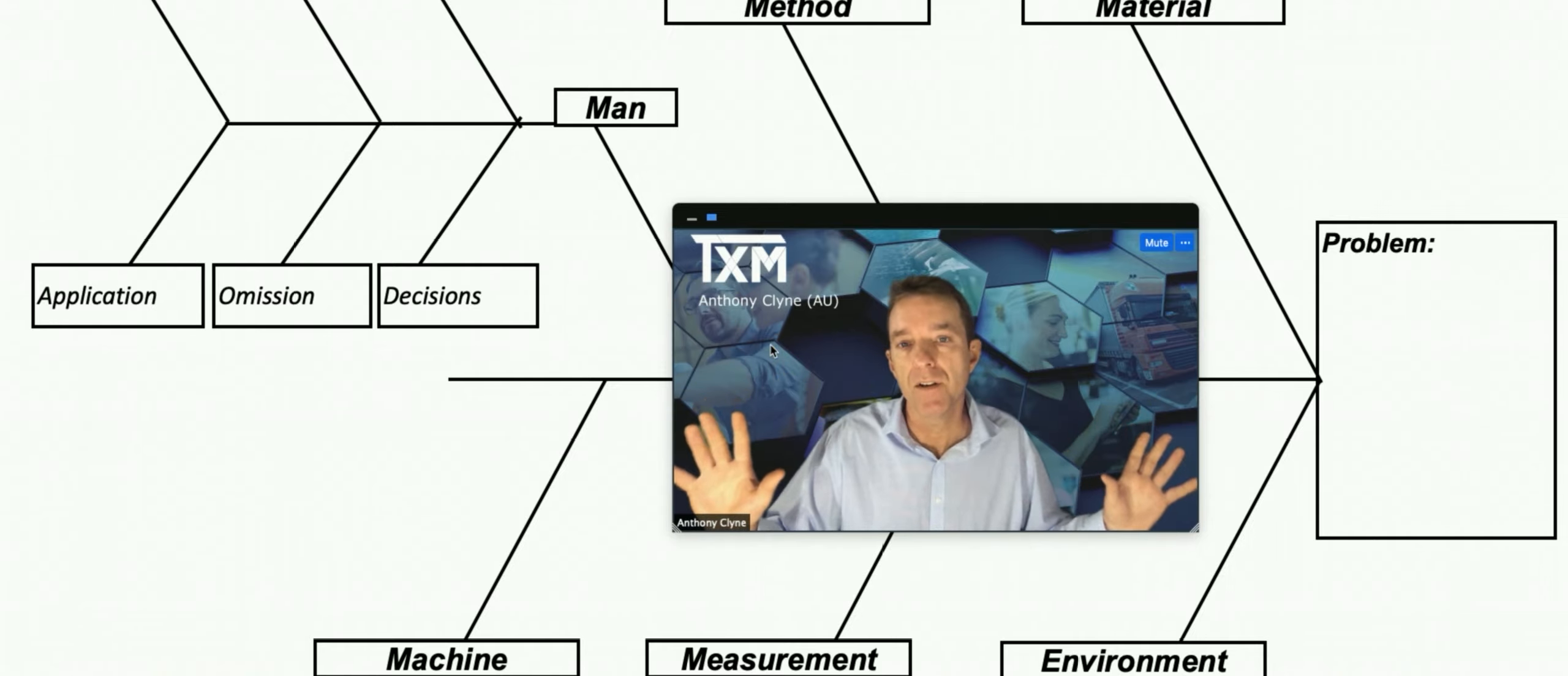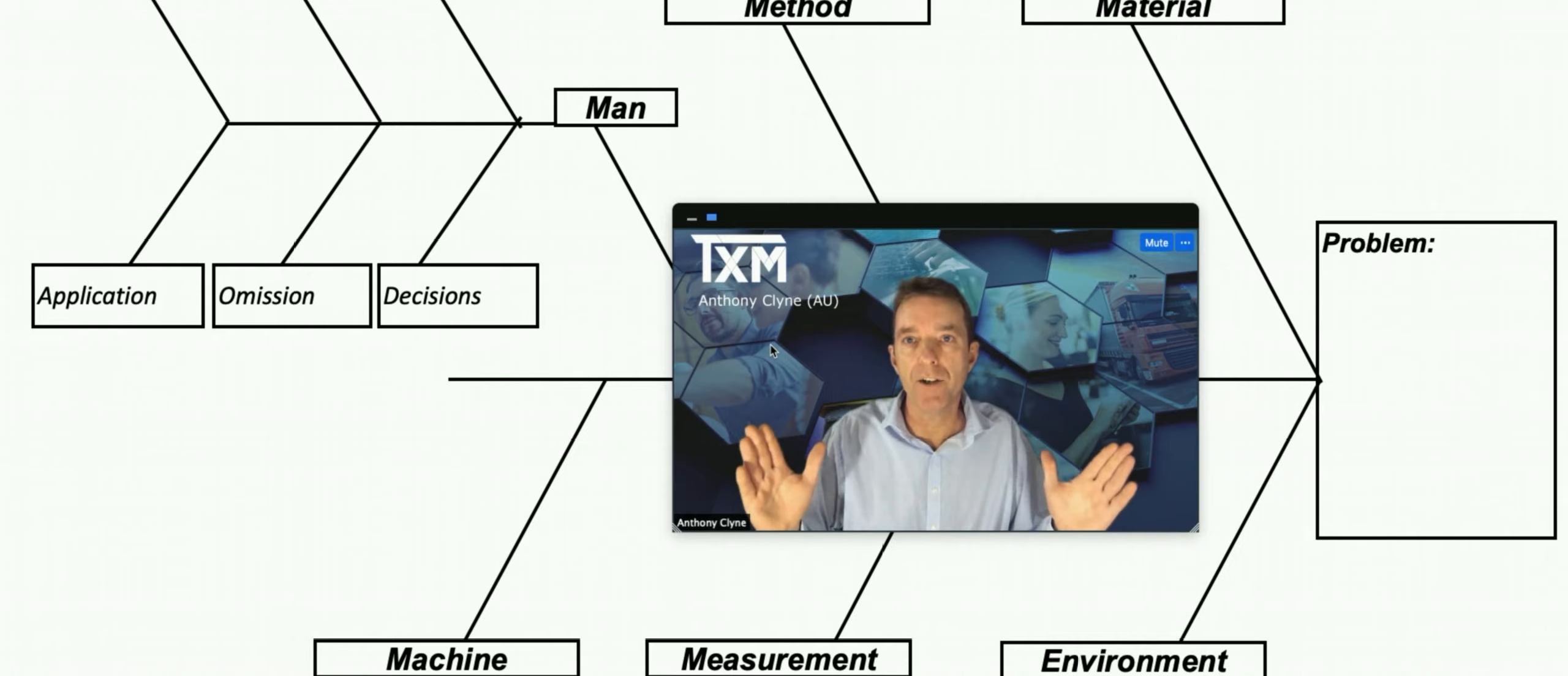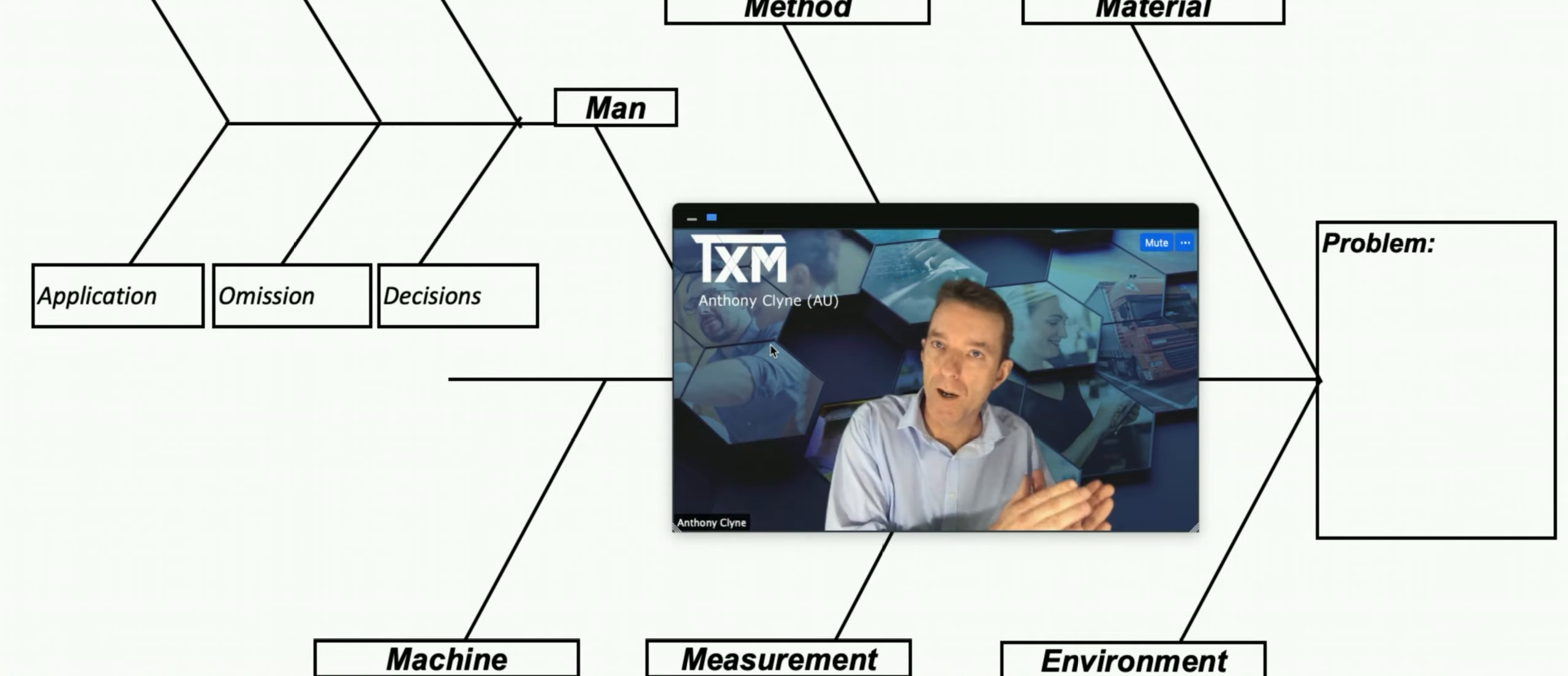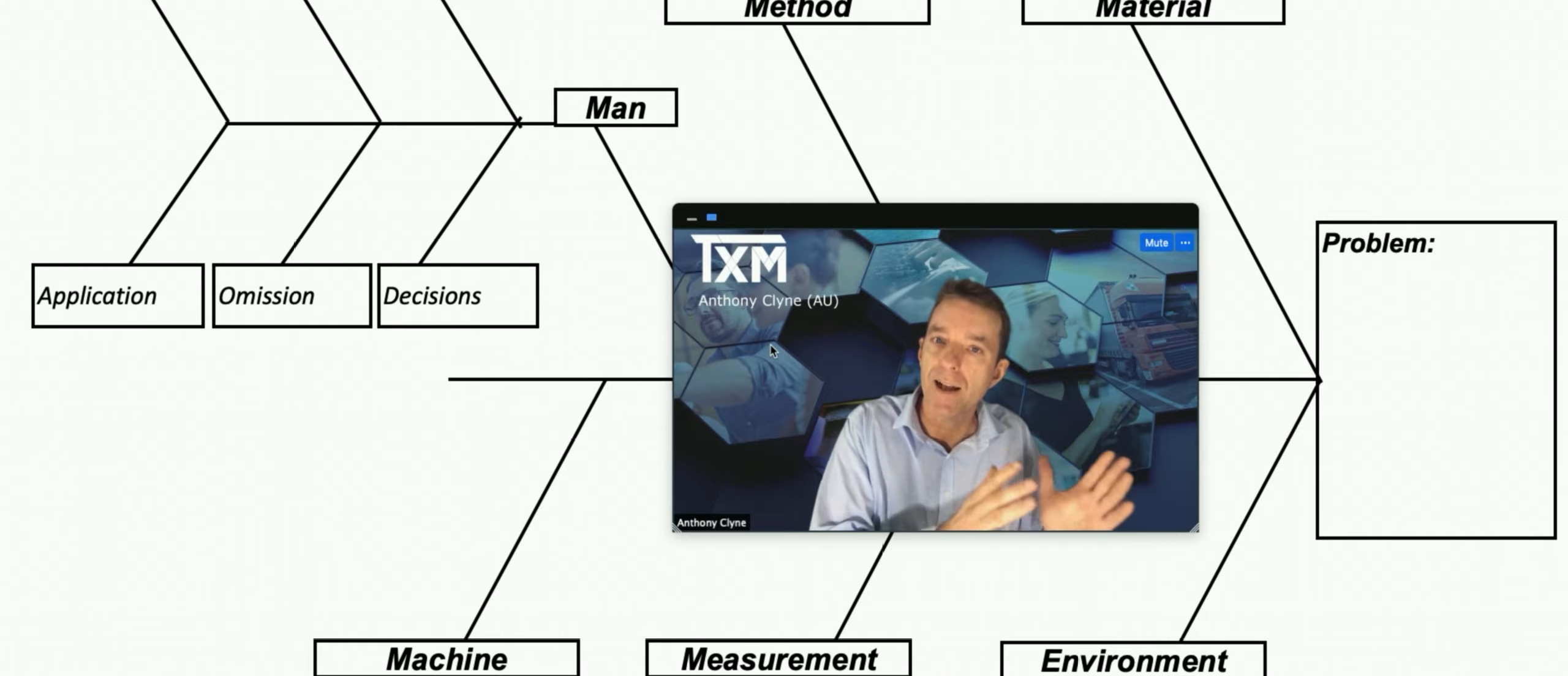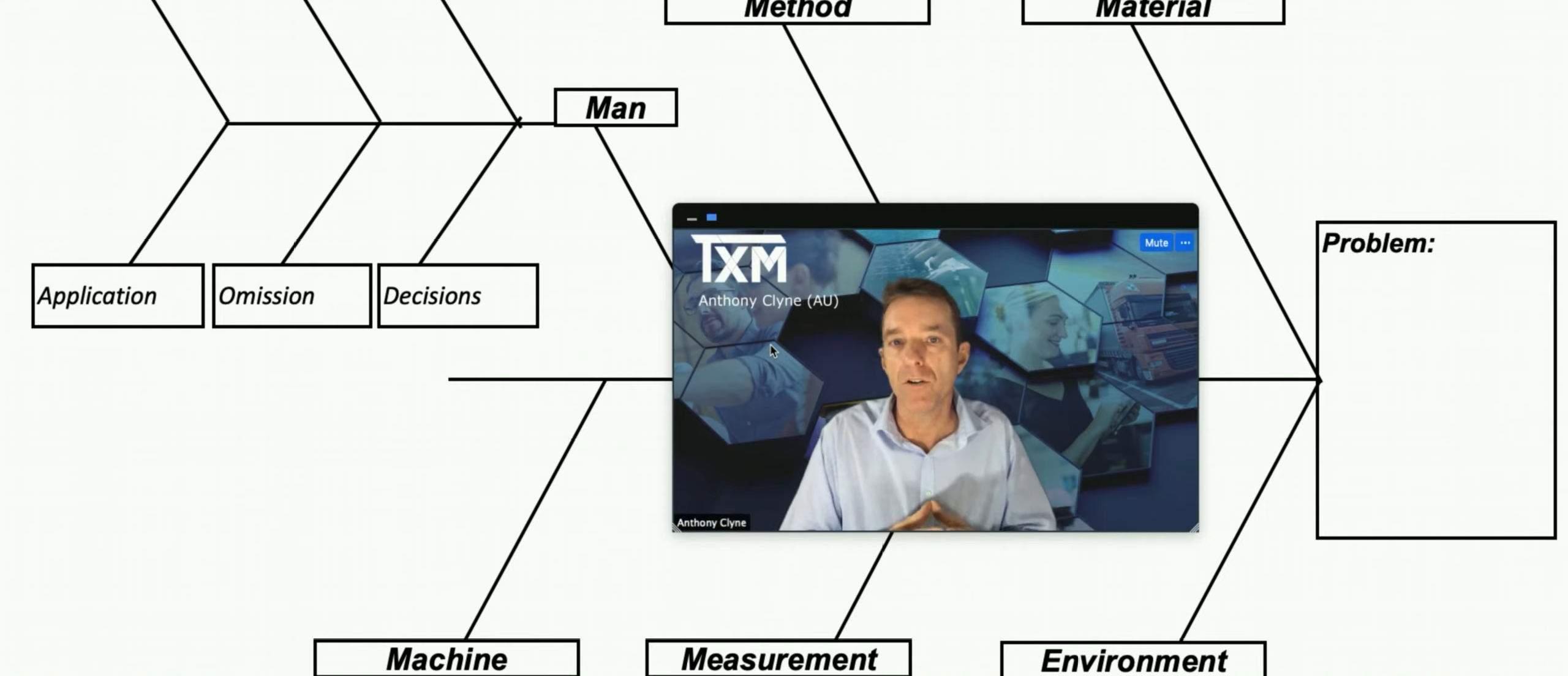What that does is it has a broad range of the most likely causes. If we just do three, two, and one then often we get a big cluster of causes and it doesn't polarize exactly which one it is. Well thank you for watching this TXM TV episode on the fishbone diagram. I'm Anthony Klein and I hope you watch us next time on TXM TV, thank you.